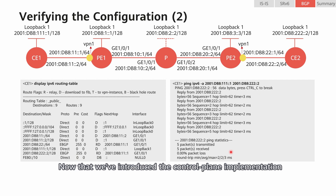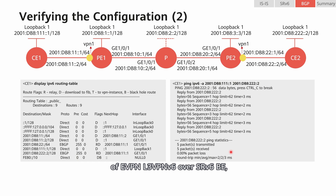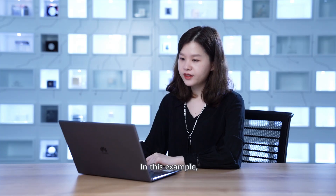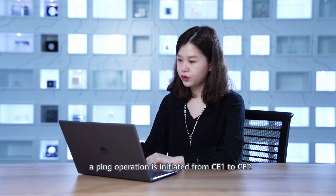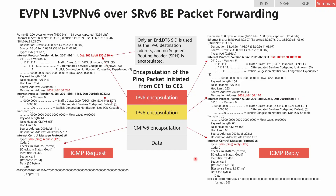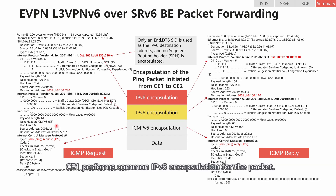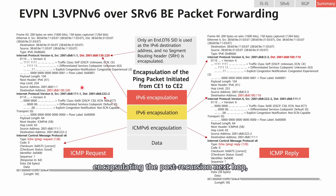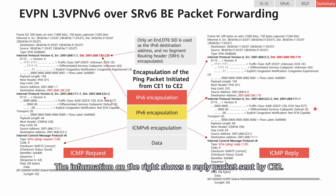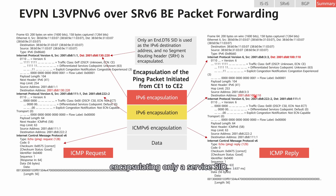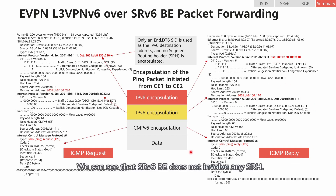Now that we've covered the control plane implementation, let's look at how packets are forwarded. A ping operation is initiated from CE1 to CE2 to simulate packet encapsulation. The ping packet sent by CE1 is an ICMP request, and CE1 performs common IPv6 encapsulation. After receiving the packet, P1 performs SRV6 encapsulation, encapsulating the post-recursion next-hop, which is the End.DT6 SID configured on P2. For the reply packet sent by CE2, P2 performs SRV6 BE encapsulation, encapsulating only a service SID — an End.DT6 SID. We can see that SRV6 BE does not involve any SRH (Segment Routing Header).